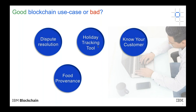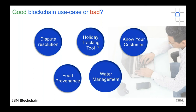Food provenance is another good use case — we gave a demo last week. The key thing is that managing and tracking where food came from entails more than one distributor and manufacturer, so it's a good use case. Water management is also important, and after thinking it through it's a good use case for reasons we'll discuss today.